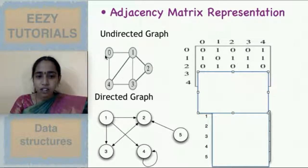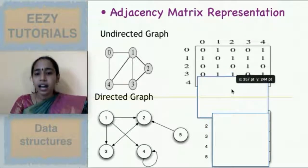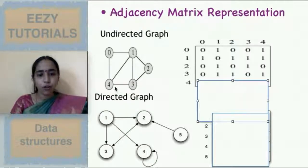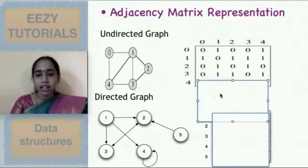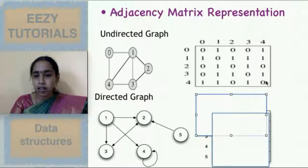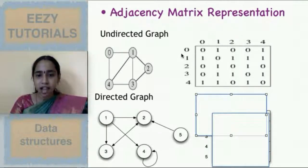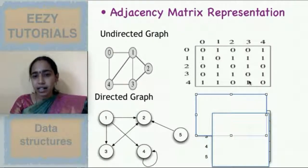For vertex 3, edges go to 1, 2, and 4, so those entries are 1 and others are 0. For vertex 4, edges go to 0, 1, and 3 — entries for 2 and 4 (self) are 0 and others are 1. So we have formed the adjacency matrix. The row and column indices 0–4 are written for your understanding; the actual adjacency matrix is enclosed in matrix brackets.